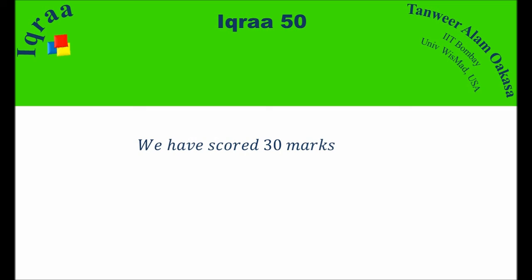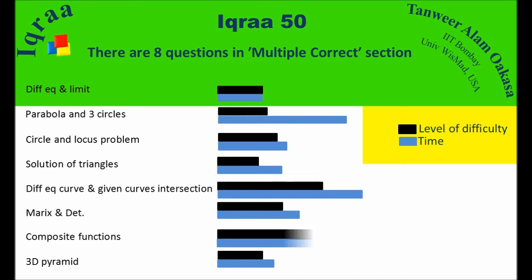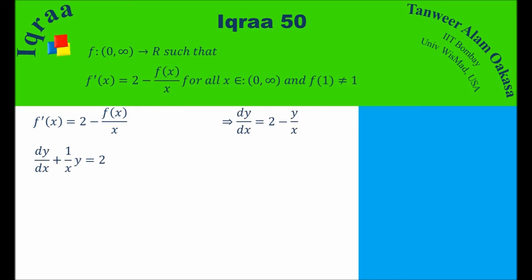Now let's look at the multiple-correct section with 8 questions. Examining difficulty and time, the differential equation and limits problem takes less time. The problem states f'(x) = (2 − f(x))/x with f(1) ≠ 1. Rearranging gives dy/dx + (1/x)y = 2, a linear ODE with integrating factor x. The solution is y·x = x² + c, giving f(x) = x + c/x with c ≠ 0.